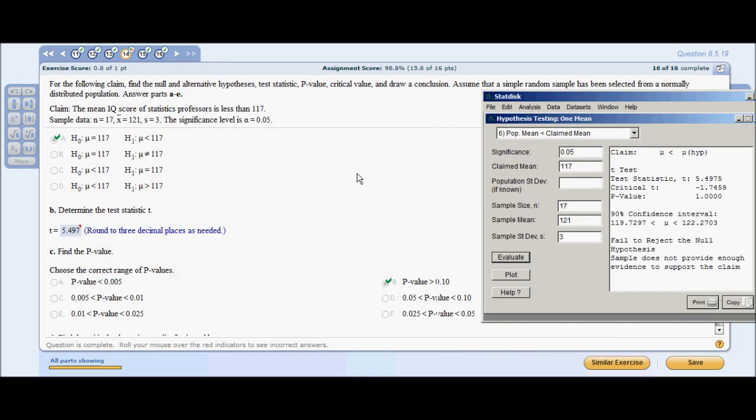Problem 14: For the following claim, find the null and alt hypothesis test. The mean IQ score of stats professors is less than 117. For our sample data, we have a sample size n of 17, a sample mean x-bar of 121, and a sample standard deviation s of 3. The significance level is 0.05 alpha, which is pretty much standard, and your claim mean is 117. We're going to go to hypothesis testing of population one mean, and we're going to use number 6, population mean is less than the claimed mean, as we have in our alternate hypothesis.